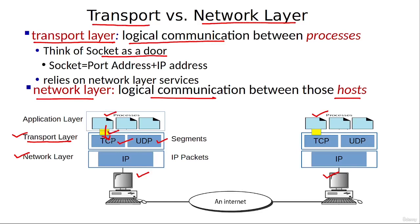If necessary, the transport layer breaks down these messages into smaller segments, and with each segment a transport layer header is attached. These segments are then given to the network layer, which attaches its own network layer header to these segments. As a result, these segments are now called IP packets, and these IP packets are routed from the source host to the destination host using the internet protocol over the internet.